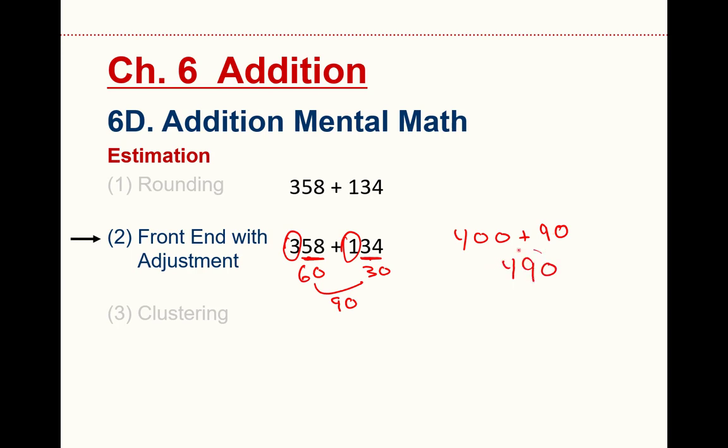Notice we get the same answer with the front end with adjustment that we did when I did rounding to two places. But when I did rounding to two places, I had to add, in my mind, 360 plus 130. I would say adding 400 plus 90 is a little bit easier than adding 360 plus 130. Honestly, I find that I use this technique a lot unthinkingly. If I have some larger numbers, I just start to add them and that's a good way to do it.